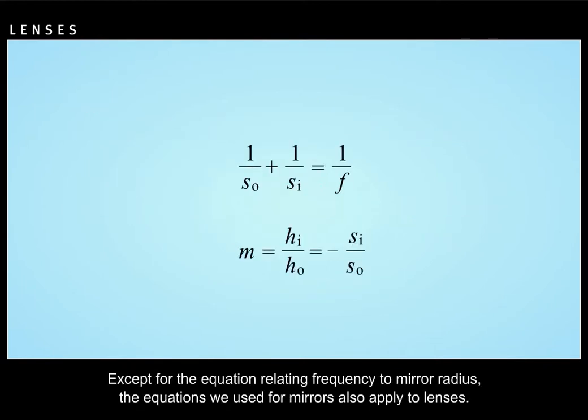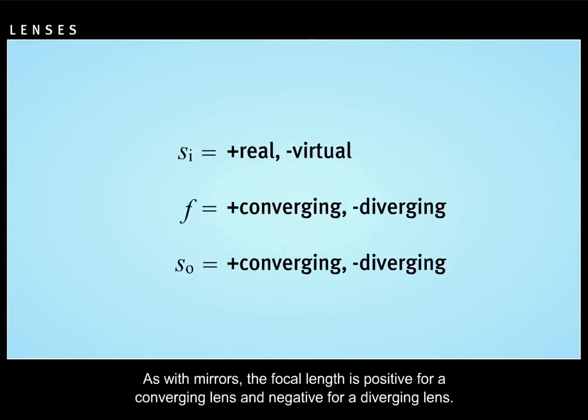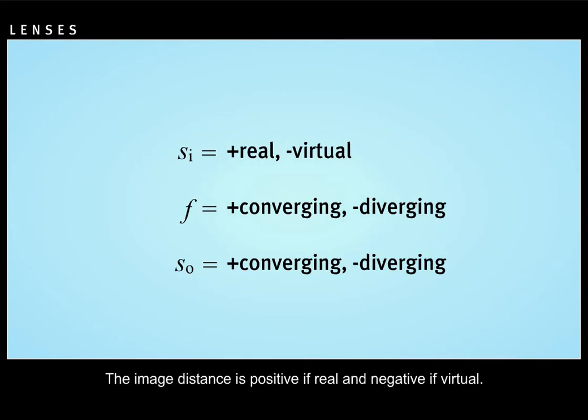Except for the equation relating frequency to mirror radius, the equations we use for mirrors also apply to lenses. As with mirrors, the focal length is positive for a converging lens and negative for a diverging lens. The image distance is positive if real and negative if virtual. The object distance is almost always positive.